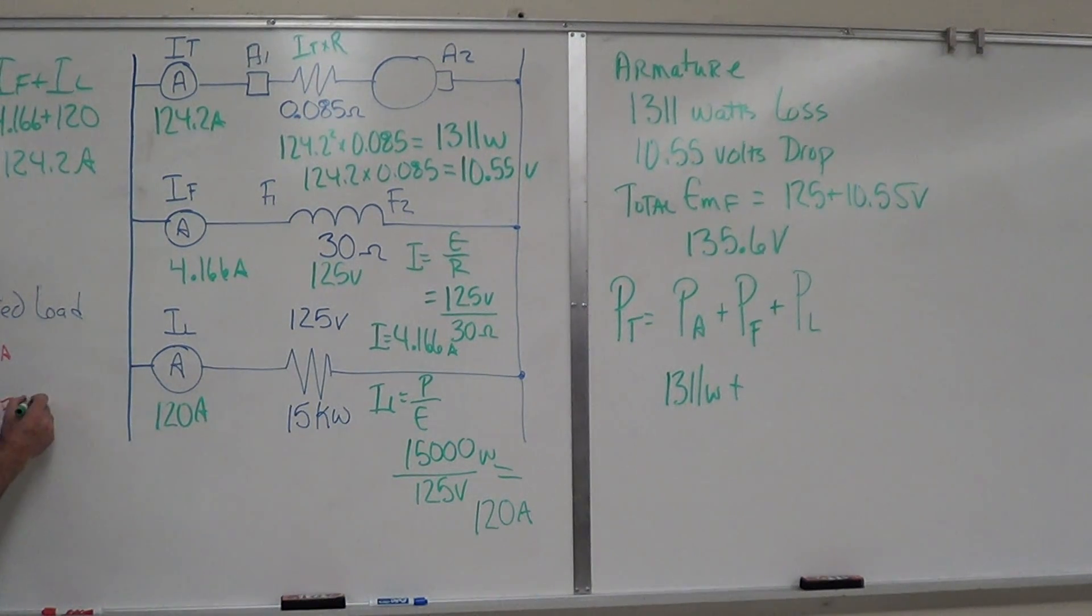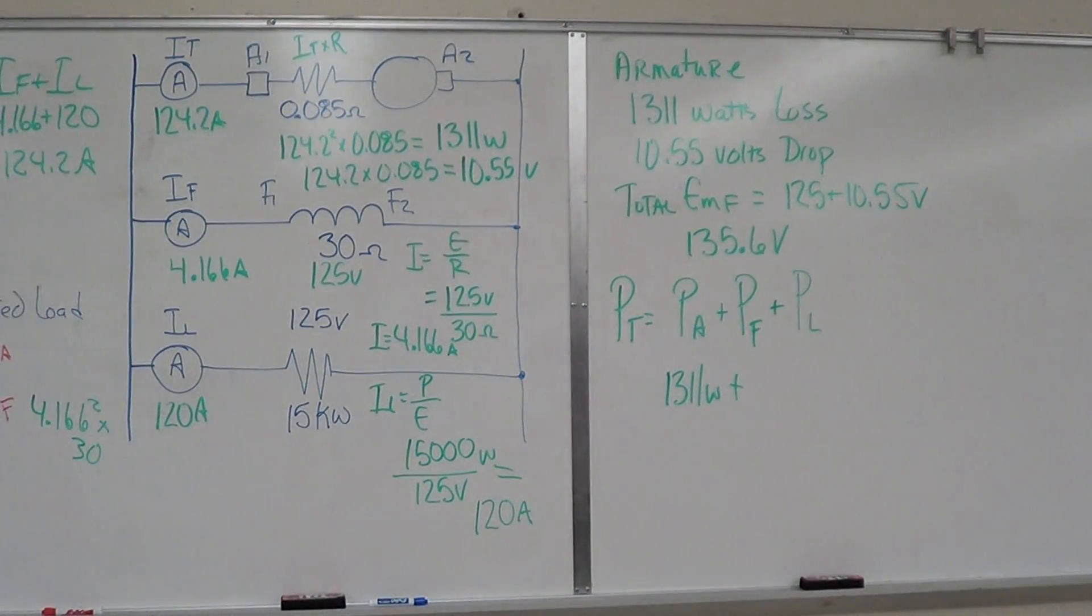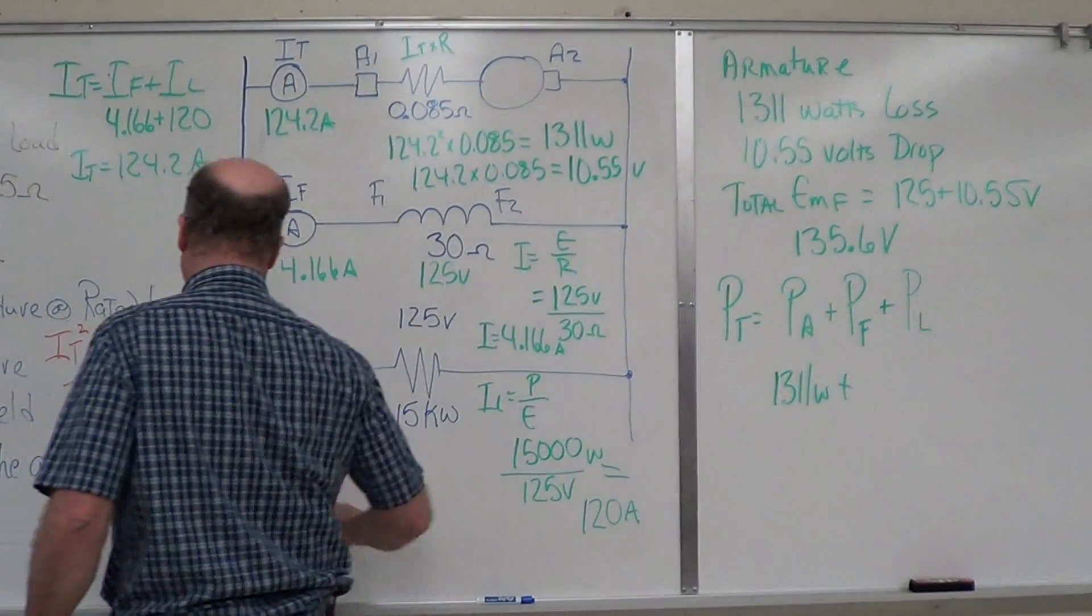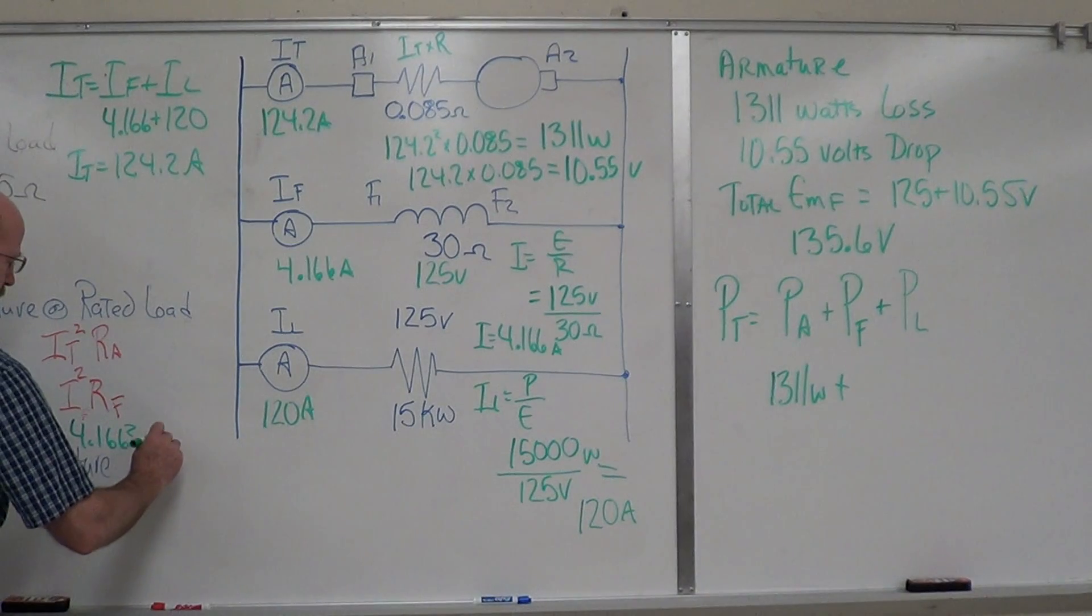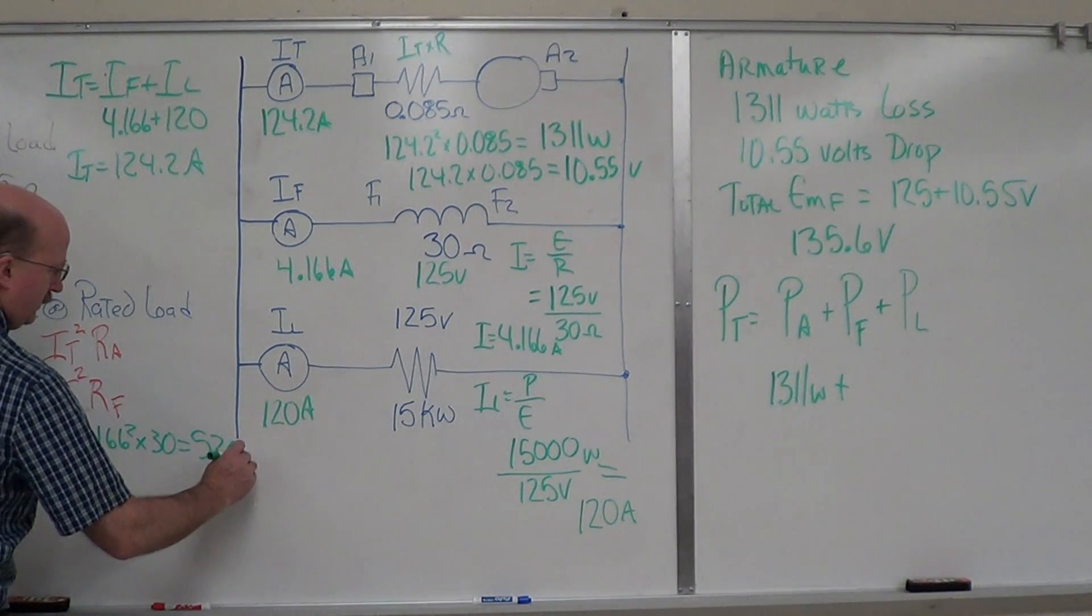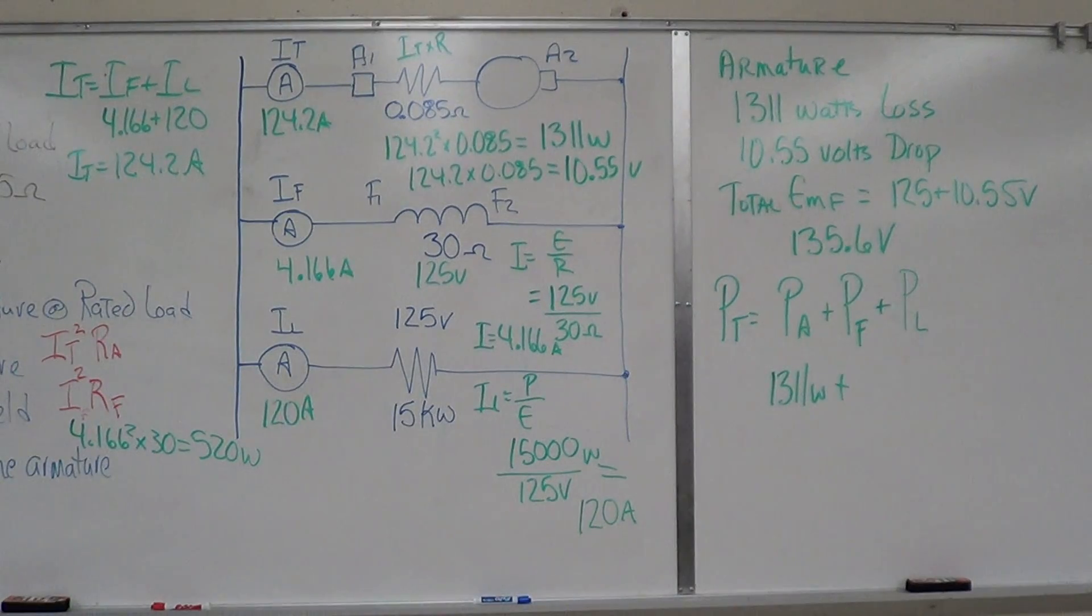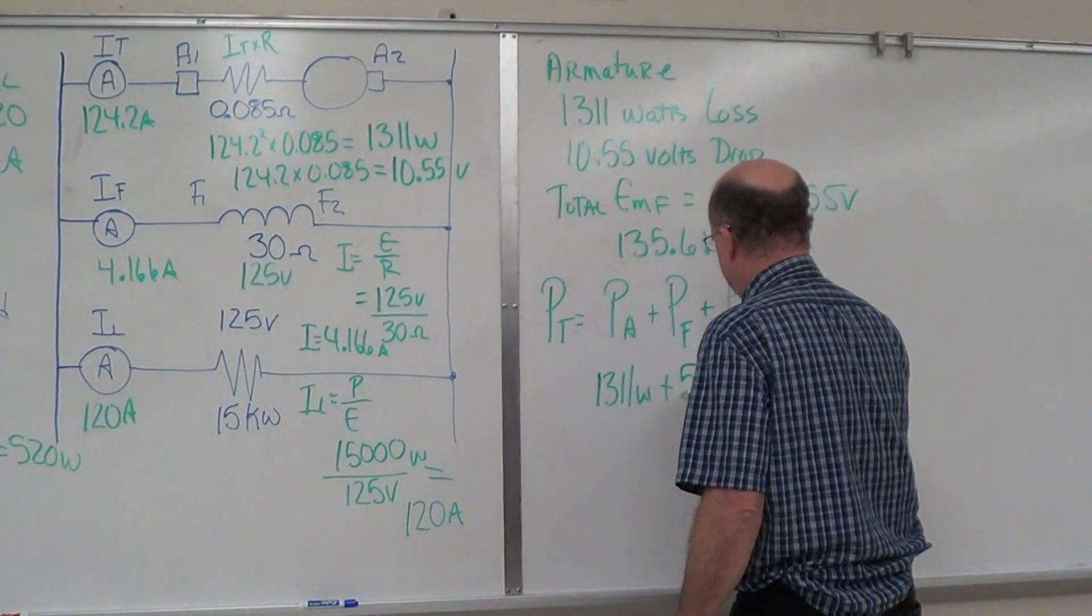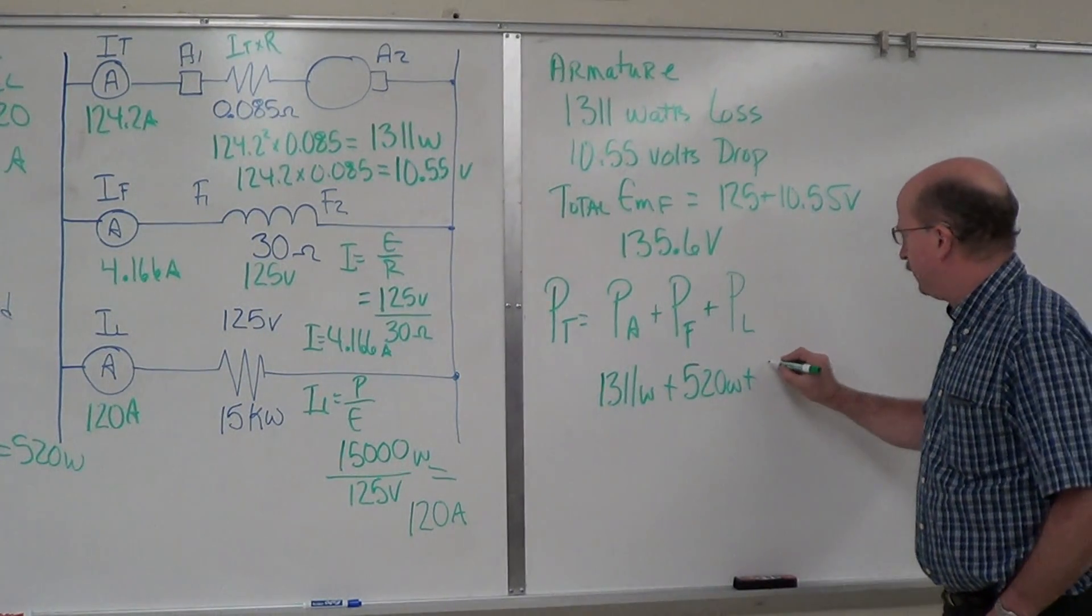Power in the shunt field is 4.166 squared times 30, which equals 520 watts. So we've got 1,311 plus 520 plus 15,000.